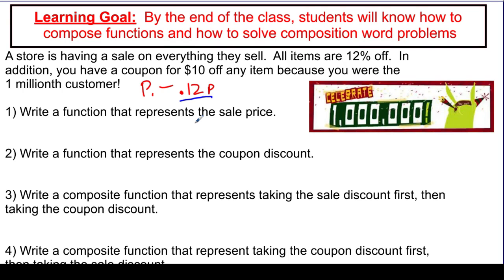I need to remove the savings from the actual price — take the price and subtract what I'm going to save, which is 0.12p. An easier way of writing this is 1p minus 0.12p, which simplifies to 0.88p. Wait — 100% minus 12% is 88%... actually 78%. If you take 78% and multiply it by the price of the item, that tells you how much you're going to pay — the sale price.